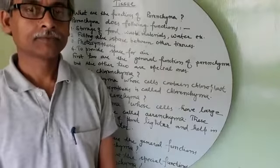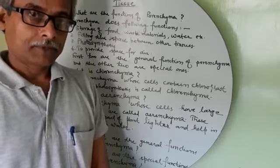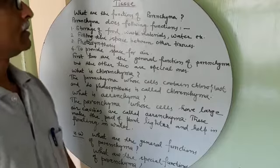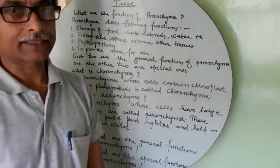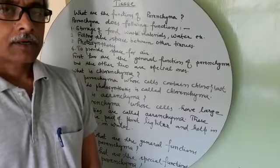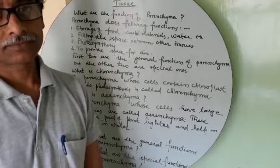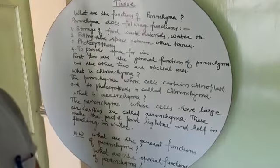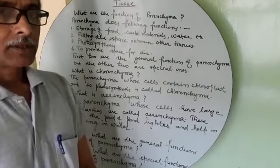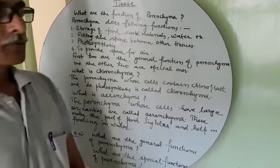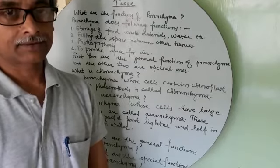Hello my dear students. We were studying simple permanent tissue and we have studied the definition and characteristics of parenchyma, collenchyma, and sclerenchyma. Can you tell me what are the functions of parenchyma? We shall study about the functions of parenchyma. There are two types of functions: one general function and the other special function.